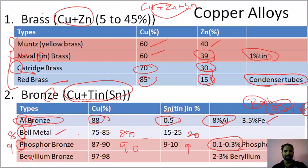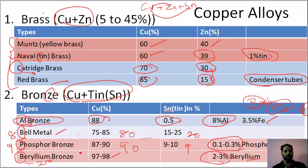Next, beryllium bronze. Beryllium is B, second place. Now, 2 to 3% beryllium, remaining copper. This is 2.75 — in the range 2 to 3% beryllium, remaining copper. Phosphorus bronze and beryllium bronze are bearing materials used.